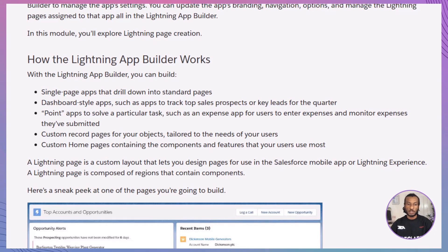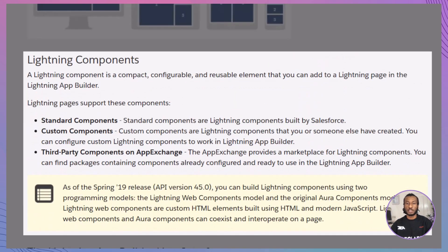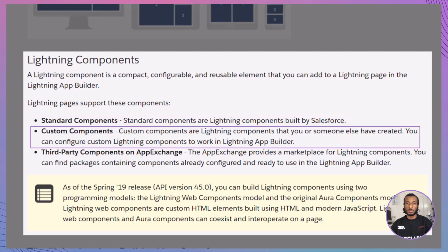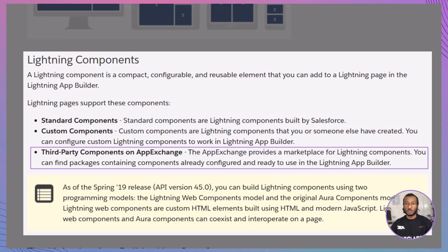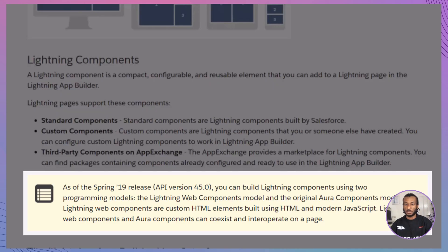Now let's turn our attention to Lightning components, the essential building blocks of your Lightning pages. These come in three main types: standard components, crafted by Salesforce to deliver a wide range of built-in functionalities; custom components, developed by you or your team to address unique business needs; and third-party components, readily available on the AppExchange for seamless integration. Since the Spring 19 release, you have the flexibility to build components using either the modern Lightning Web Components model, which embraces cutting-edge web standards for efficiency and ease, or the original Aura Components model.